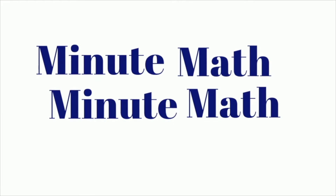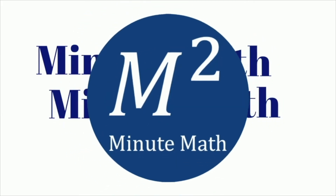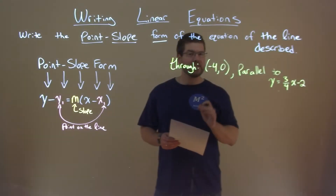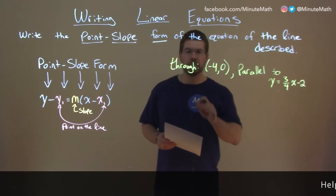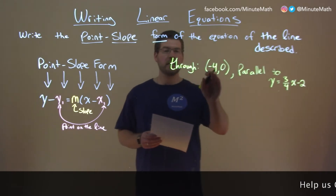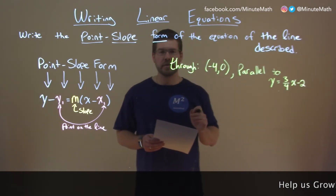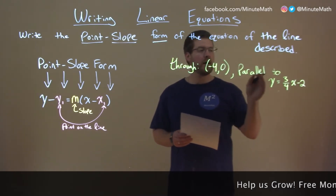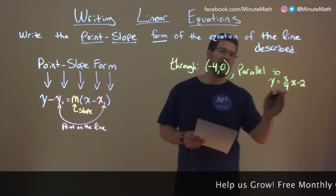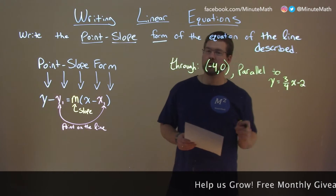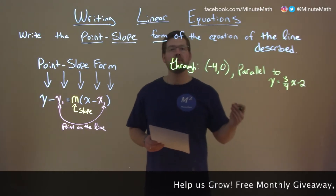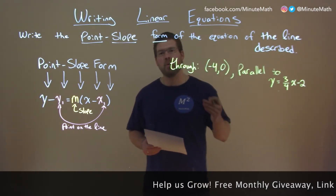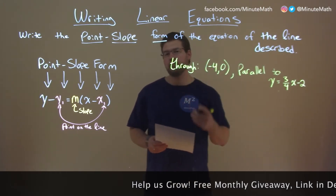So, if I was given this problem: through negative 4, 0, and it's parallel to y equals 3 fourths x minus 2, and we want to write this in point-slope form.